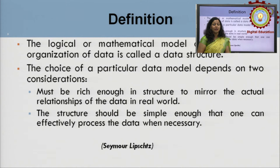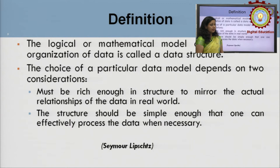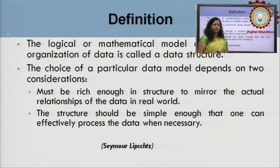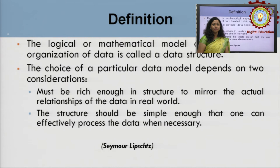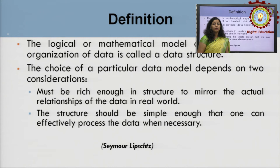Second, the structure should be simple enough that one can effectively process the data when necessary. Once we decide how to organize the data to solve a real-world problem, we store it — but after storage, we also need to use that data. When we need to process it, it will only be possible if the algorithm is simple enough. So two things to remember: which model mirrors the real-world data, and which structure is simple enough for effective future processing.